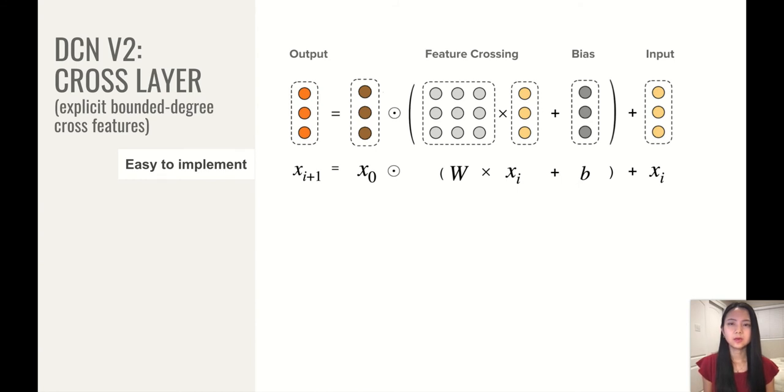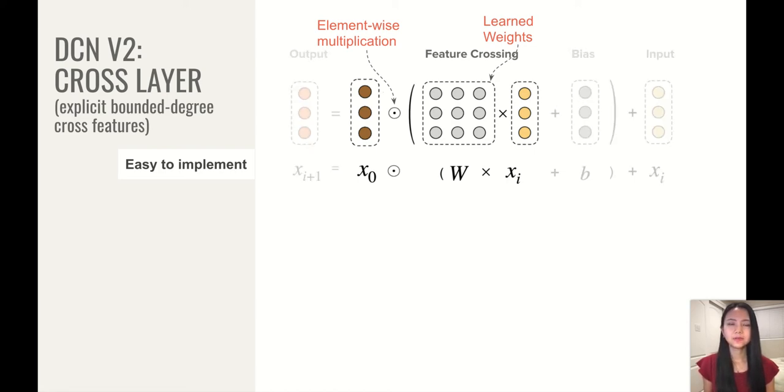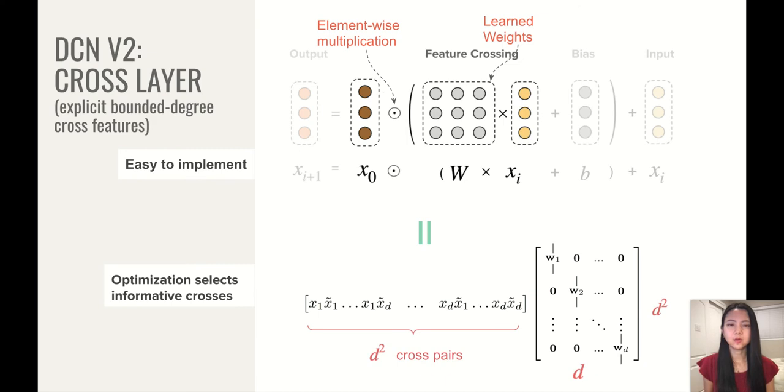So the plot you see here is one cross-layer in DCN V2. Where X is an input to a layer, where W is the associated matrix to be learned. The symbol represents element-wise multiplication. And X null is a vector that contains the original features. And we typically set this to be the embedding layer. We see that this formula is quite elegant and fairly easy to implement in different environments. And it also does a feature crossing we would like. So to give you a better picture of what it does, we can actually rewrite it into the following formula. Where we first implicitly create all the d-square cross-pairs, and then immediately project it back to an embedding space of dimension d. And then this is to keep the efficiency of the model. And then the optimization will stack those informatic crosses by assigning different widths to a matrix.